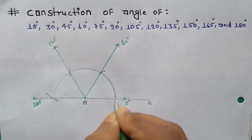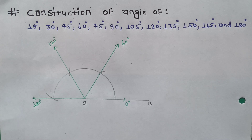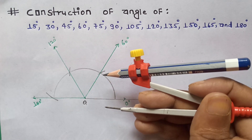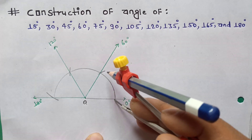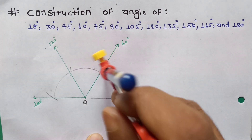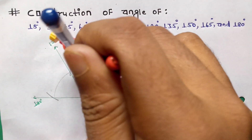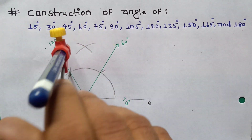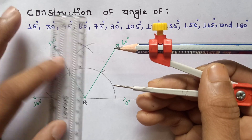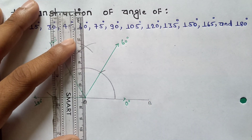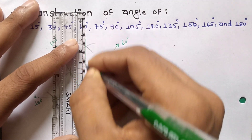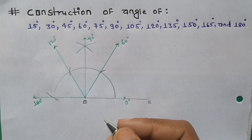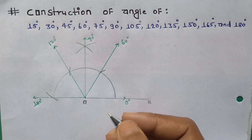Now I am going to draw 90 degrees. Without moving your compass — you can check, I am not moving it — from 60 degrees draw a line and from 120 degrees draw and cut this line. It will be 90 degrees. Just draw this line from point O. It is 90 degrees. I hope you are not confused about 60 degrees, 90 degrees, 120 degrees, and 180 degrees.